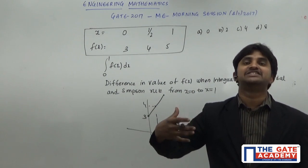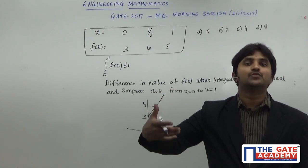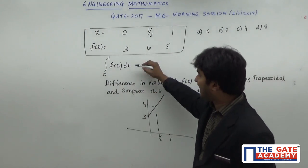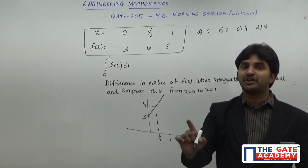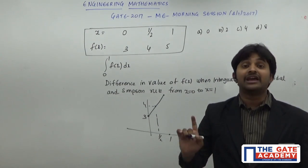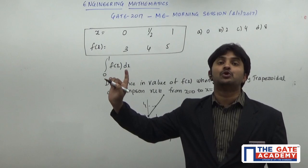Because the trapezoidal method is generally going to give you a value with an error. Now in this case, when you are integrating a line, then the error in the trapezoidal method is going to be equal to 0. The error in the Simpson's method is also going to be equal to 0.